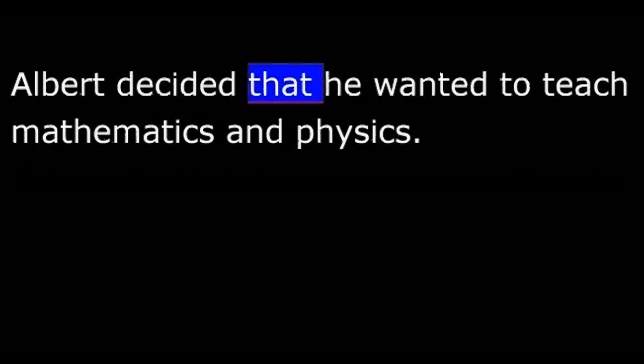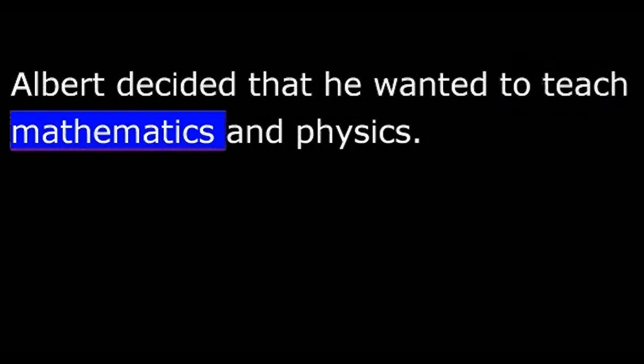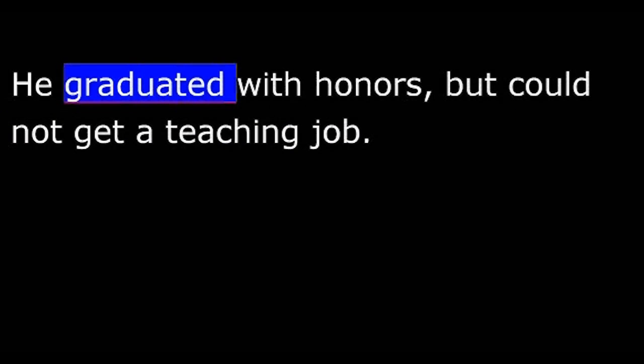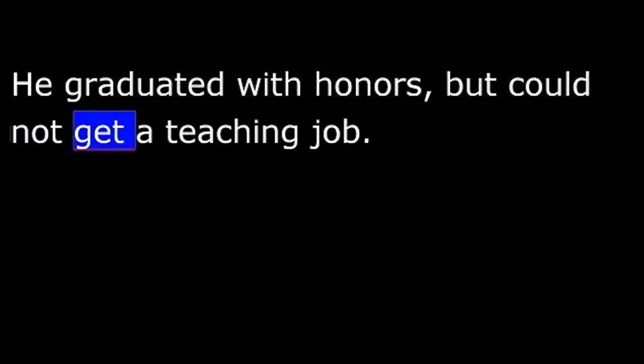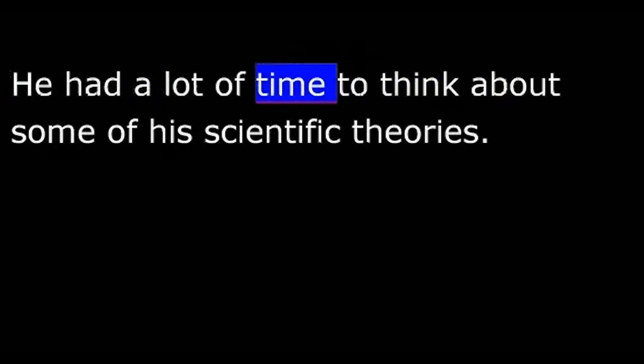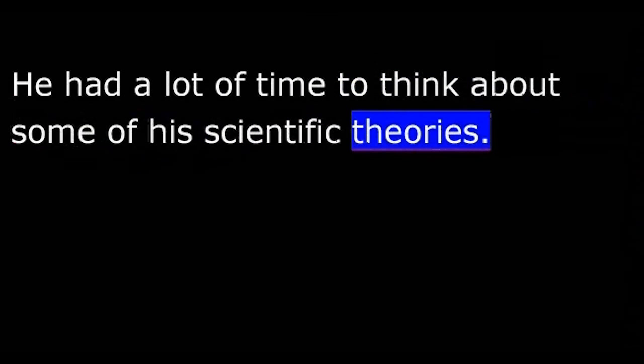Albert decided that he wanted to teach mathematics and physics. He attended the Federal Polytechnic Institute in Zurich, Switzerland. He graduated with honors, but could not get a teaching job. So he began working for the Swiss government as an inspector of patents for new inventions. The job was not demanding. He had a lot of time to think about some of his scientific theories.